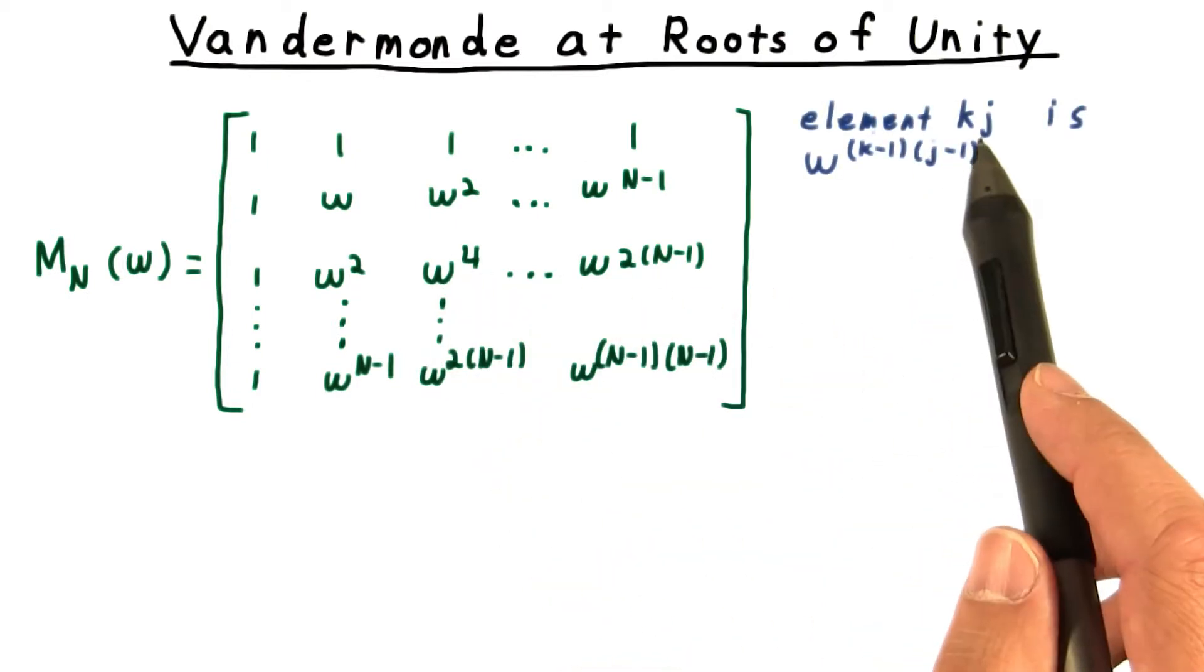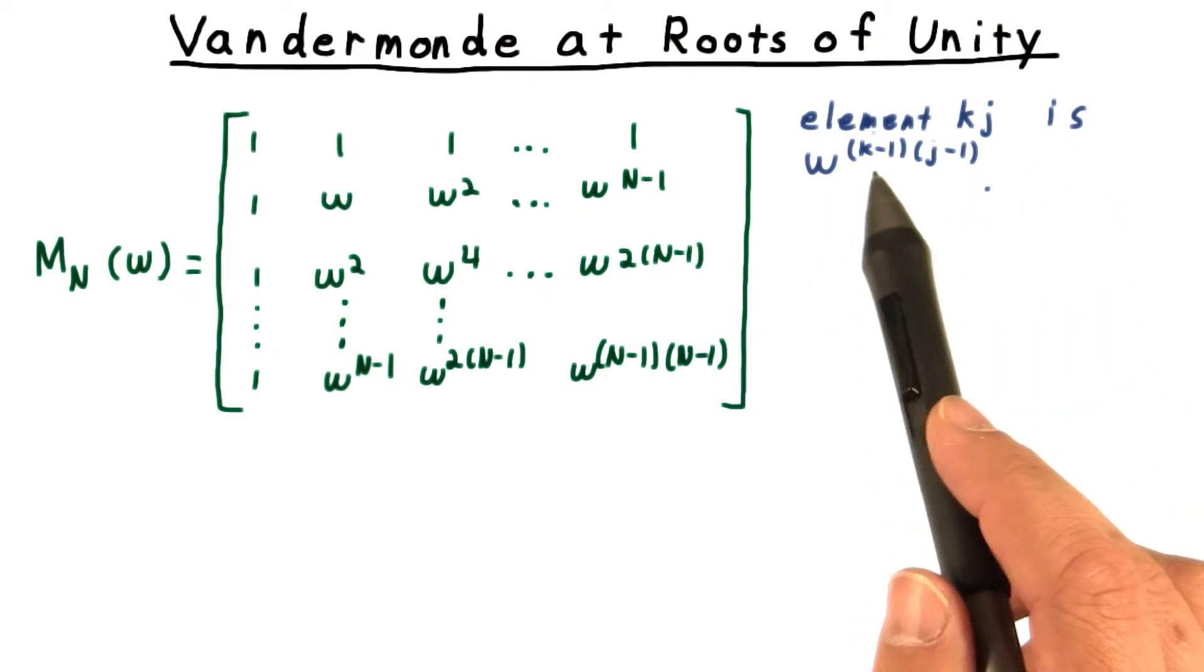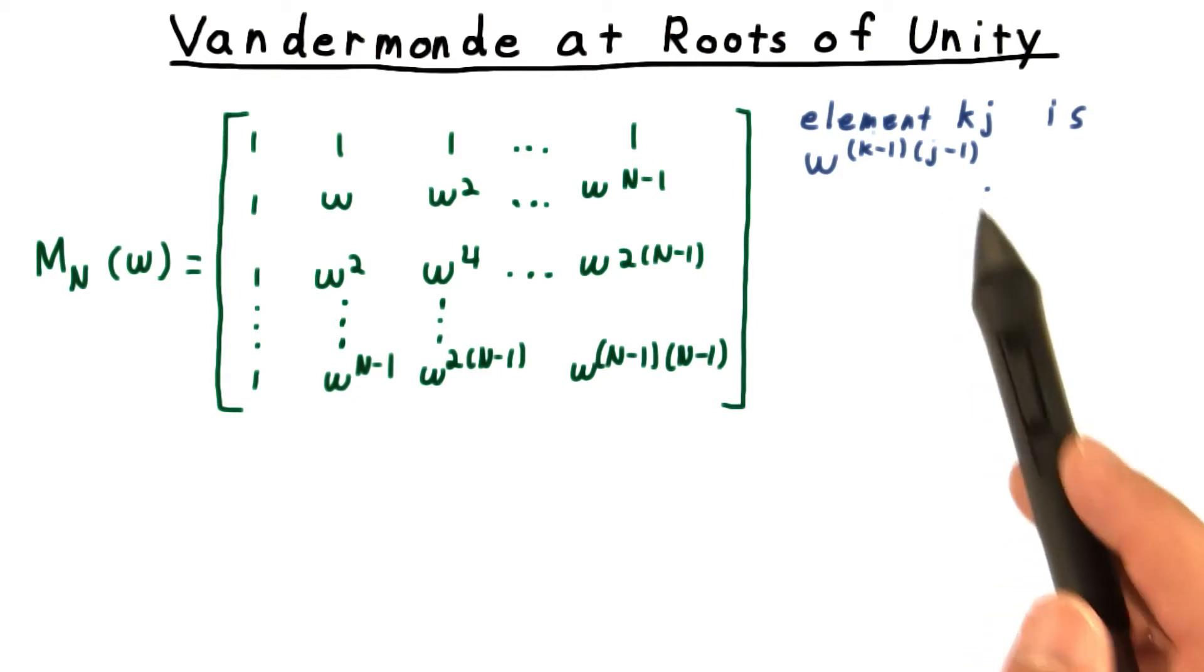In general, the kj-th element is omega raised to the k minus one times j minus one power.